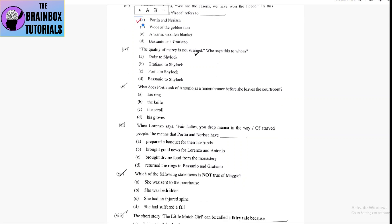Next one, the quality of mercy is not strained. Who says this to whom? This is Portia's mercy speech to Shylock. So, option number C, Portia to Shylock is correct option.